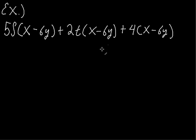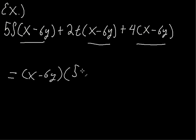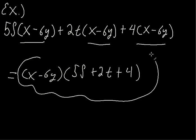This one, this is a mess, right? So I have 5s times x minus 6y plus 2t times x minus 6y plus 4 times x minus 6y. What's the greatest common factor? It's this binomial. So I'm going to factor out that binomial. So x minus 6y, what did I leave behind? 5s plus 2t plus 4. And so that would be factored out. I factored out x minus 6y.